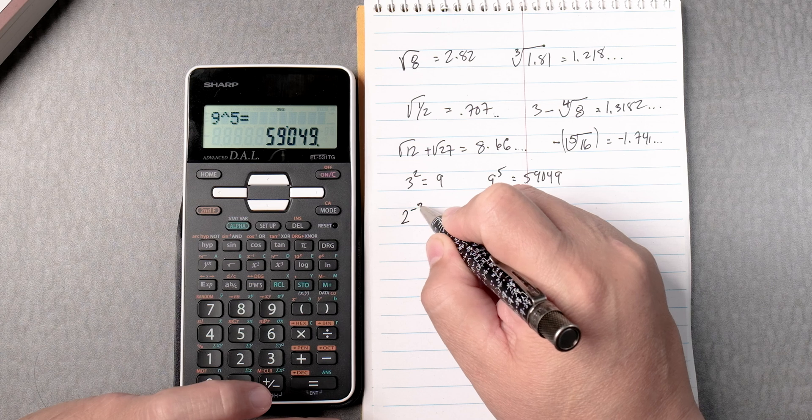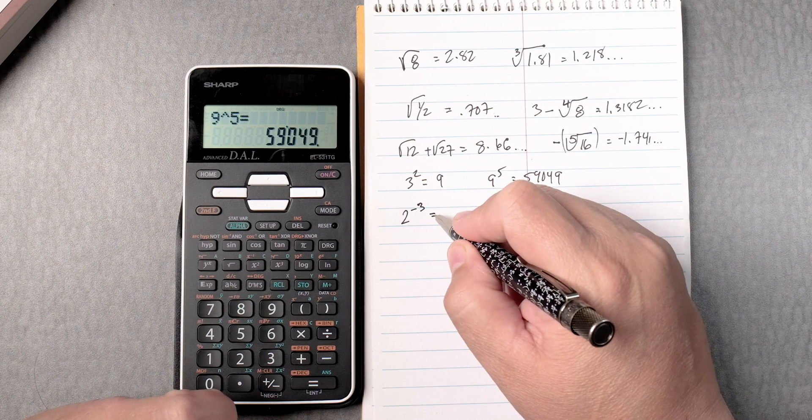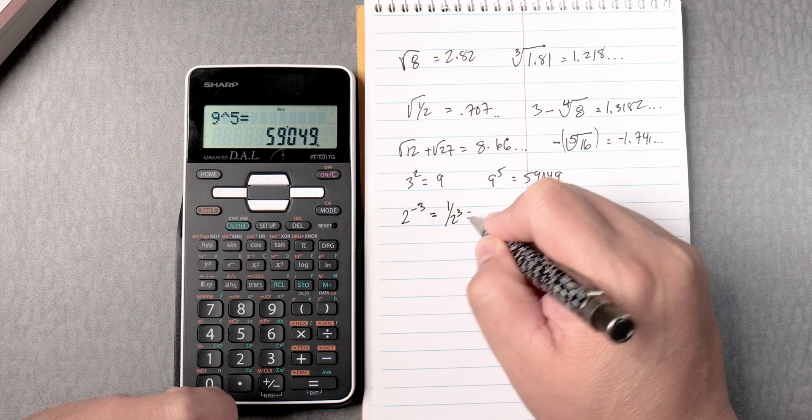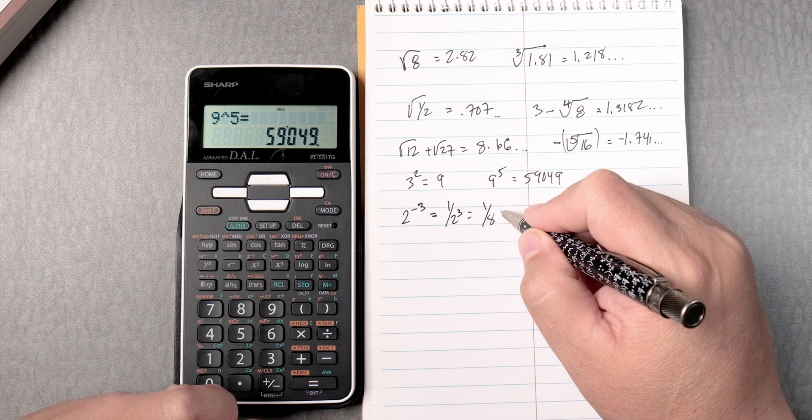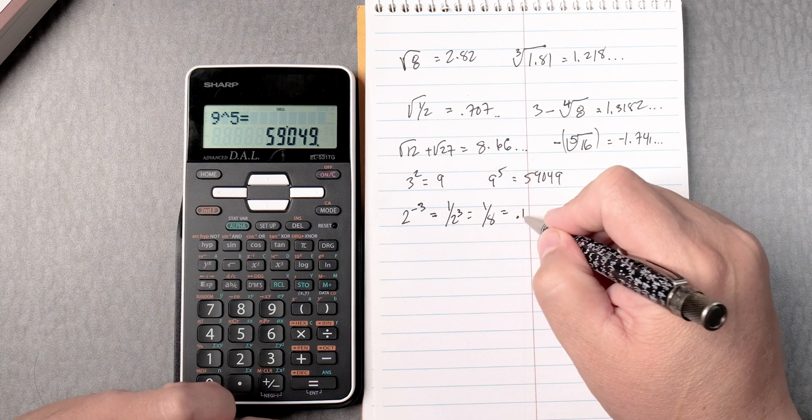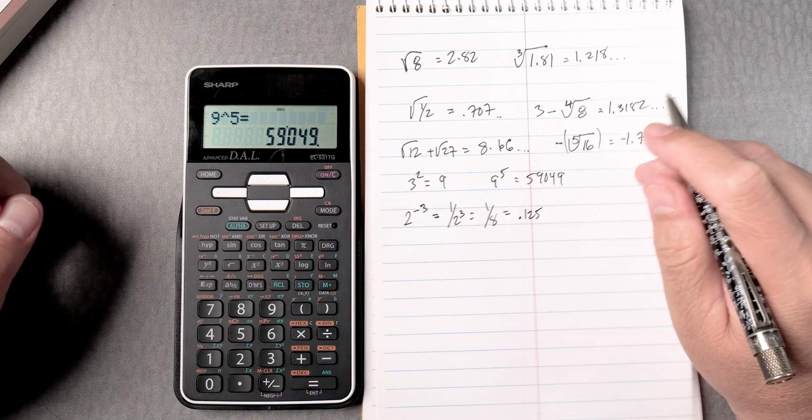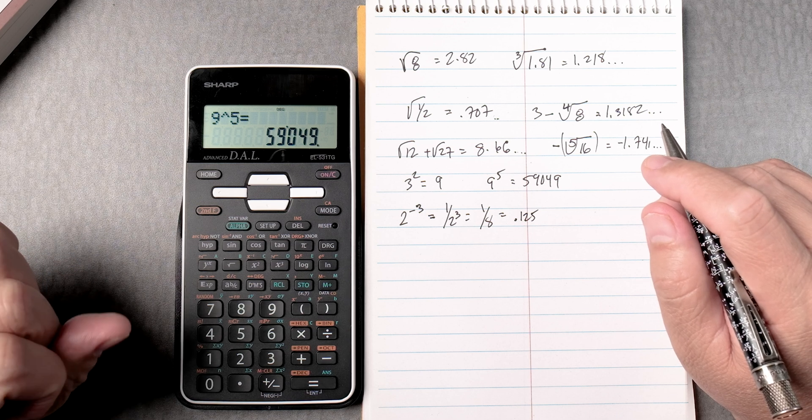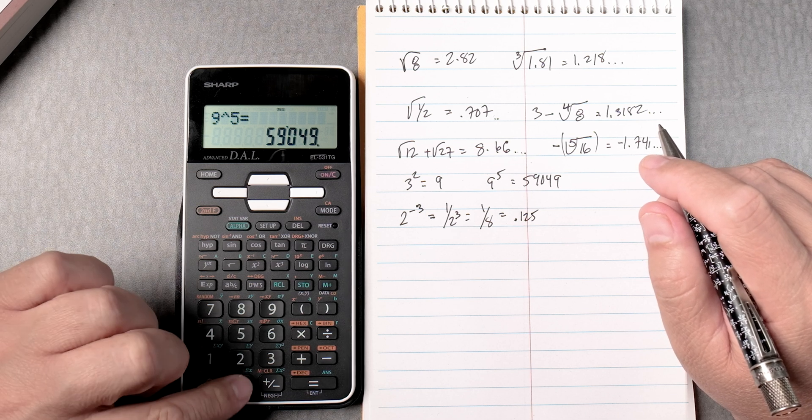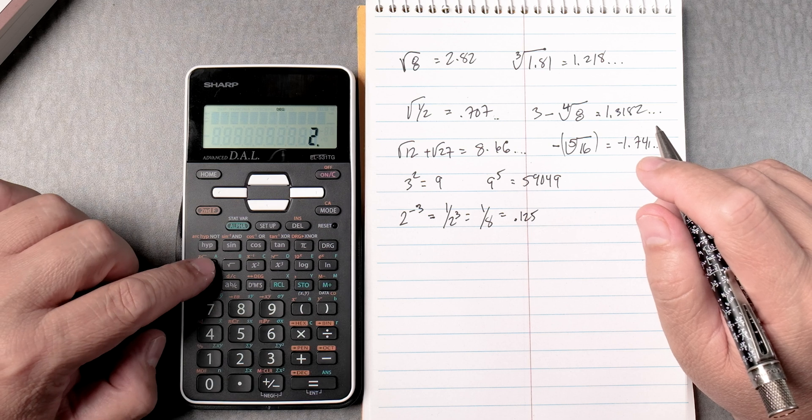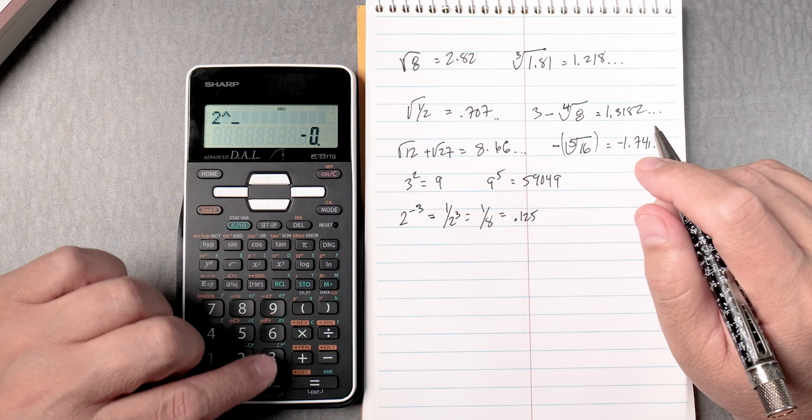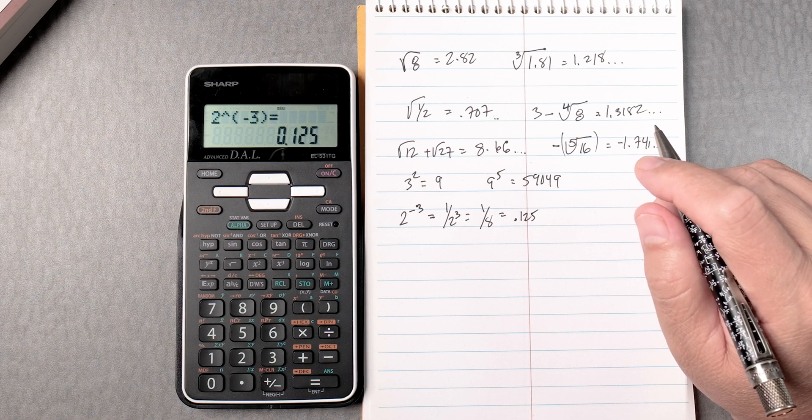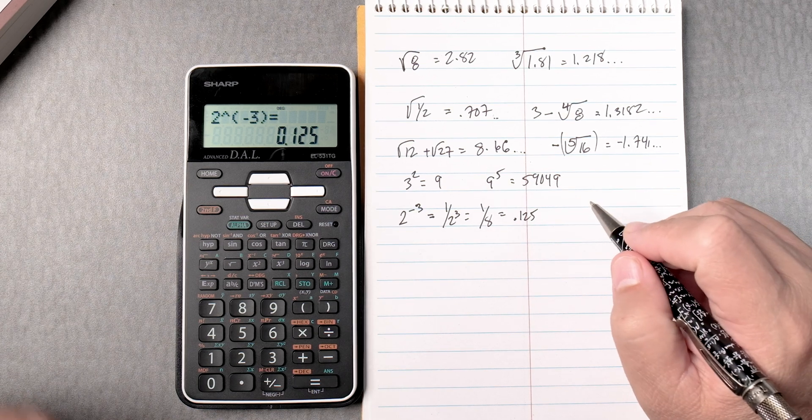2 to the negative 3. That's the same as 1 over 2 to the third. 1 over 8, and that should be 0.125. Half of 25. So 2 y to the x, negative 3 equals, and it gives you the same answer.